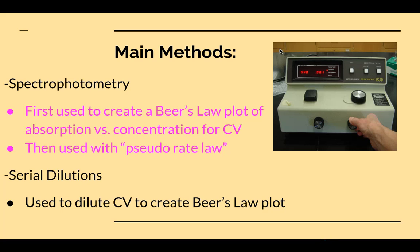Main methods. First off, we had spectrophotometry, which was a key component of the lab. We used it two times separately for part one of the lab, where we needed to create a Beer's Law plot of absorption versus concentration for the crystal violet.